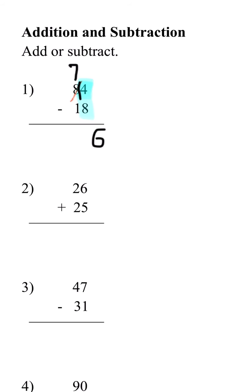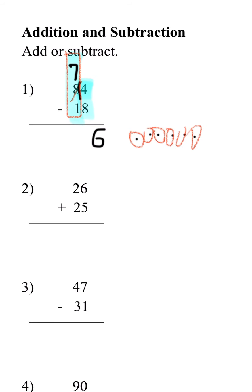And now we're going to do 7 minus 1, because that 8 became 7. We subtract 1 and count — we have 6 dots. So the answer is going to be 66.